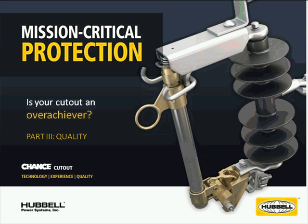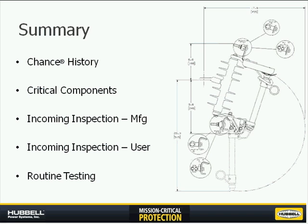This is the third segment of the cutout webinar. Today's going to be covering quality, and we will get started with the summary. We're briefly going to go through the Chance history, where the Type C cutout design originated from, and we'll get into critical components of the cutout, incoming inspection for the manufacturer and the user, and then follow up with routine testing.